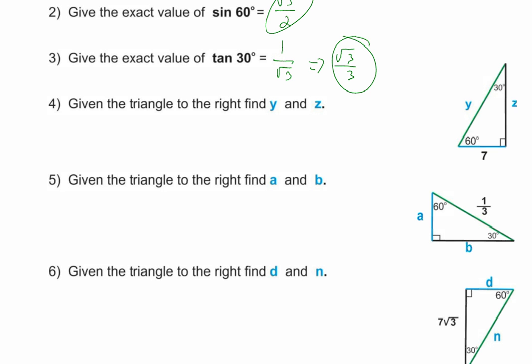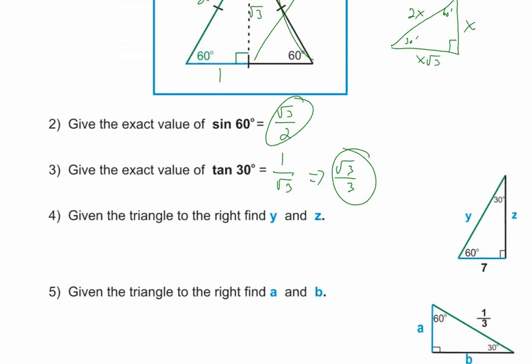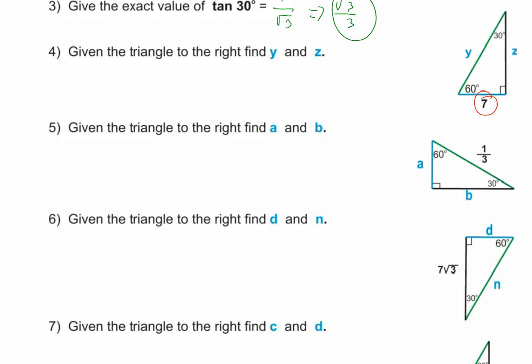Let's go through similar problems now. Looking at the first triangle: they put 7 where x would be in the pattern, meaning it's the short leg. So y — the hypotenuse — is always double, so y = 14. And z — the long leg — is 7 times √3. That's the simplistic case when the given value corresponds directly to x in the pattern.